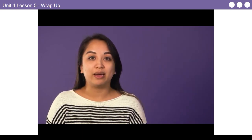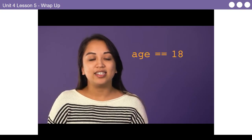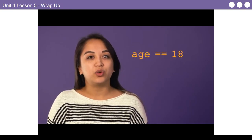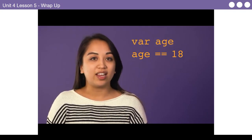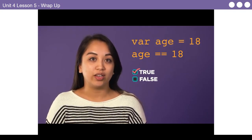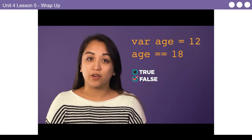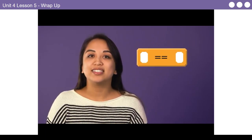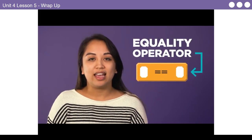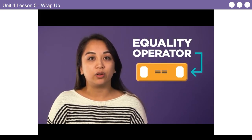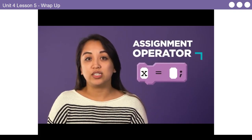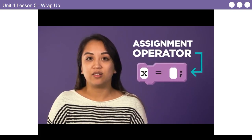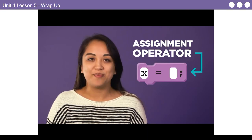In the voter registration example, your Boolean expression might look like this: Is the value stored in the variable age equal to 18? If it is, then the statement is true. Otherwise, the statement is false. Remember, the double equals is the equality operator — it asks if two things are equal or not. If you are using a single equal sign, you are using the assignment operator to set the value of a variable, which is something else entirely.